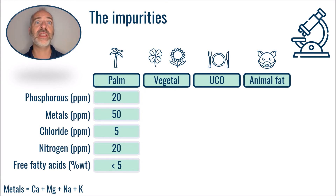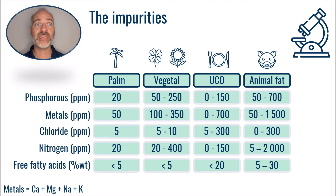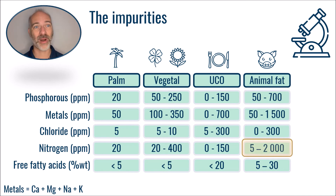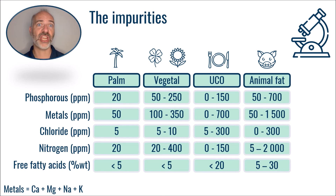On the other hand, for used cooking oils as well as animal fats, depending on their origin, the impurity content is very variable and can go very high. Indeed, we can see here that phosphorus is very present in animal fats, just like nitrogen as well as chlorine. These values will have a direct impact on the design of downstream units. Note that the viscosity of these fatty chains is about 40 centipoise at 40 degrees C — this is easy to remember.